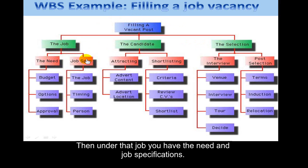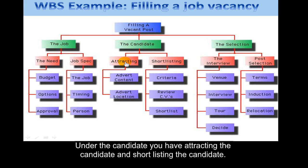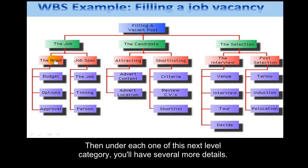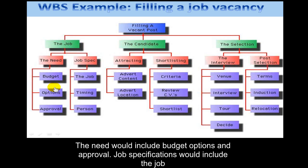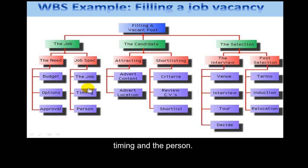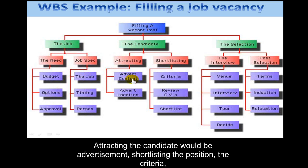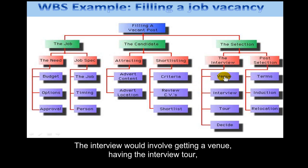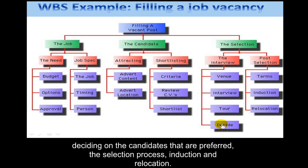Under the job, you have the need and job specifications. Under the candidate, you have attracting the candidate, shortlisting the candidate. The selection includes the interview and post-selection. Under each next-level category, you'll have several more details. The need would include budget, options, and approval. Job specifications would include the job timing and the person. Attracting the candidate would cover advertisement, content, and location. Shortlisting includes the criteria and reviewing CVs or job applications. The interview would involve getting a venue, having the interview, and deciding on preferred candidates. The selection process covers terms, induction, and relocation.